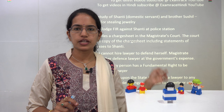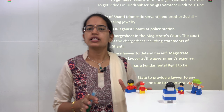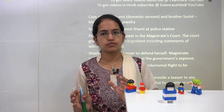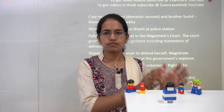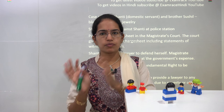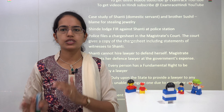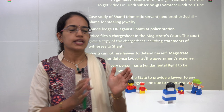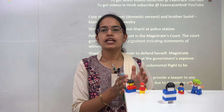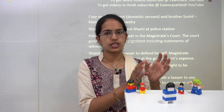Mr. Shinde went to Shanti's family and searched for the chain. However, they could not find the chain but found ₹10,000 in cash in Shanti's house. They went to the police station and filed an FIR — the First Information Report — saying that Shanti stole a chain from their house, and in lieu of which they found ₹10,000 in her home.